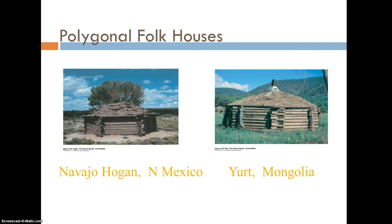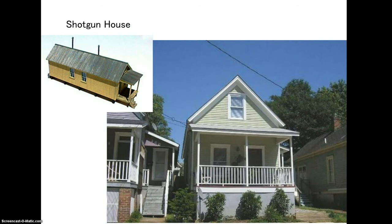Looking at folk and popular culture through their built landscapes is a fascinating comparison. Here are two very similarly built folk houses from incredibly different areas of the world, showing a traditional connection between Mongolia and the Navajo Nation. Another example is the shotgun house, very common in the South, especially around New Orleans. The idea was that you could fire a shot from the living room door and it would go completely through the house. These were houses built as infill on narrow strips to provide individual housing, and they really indicate a specific cultural landscape found only in certain areas of the country.